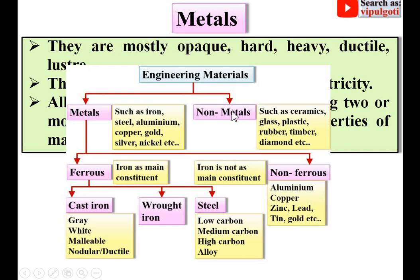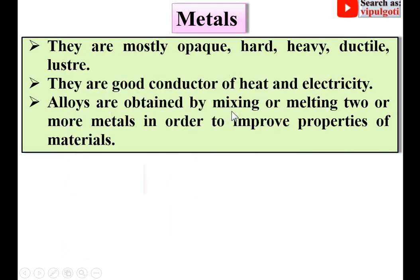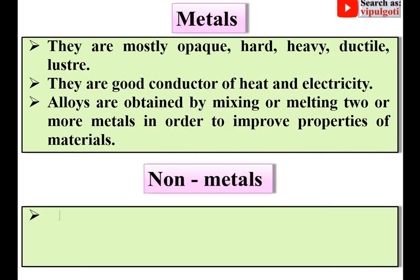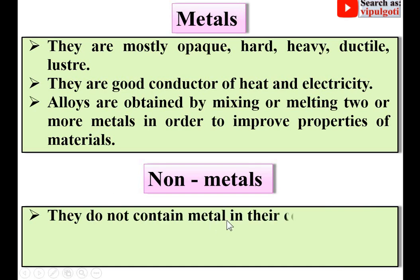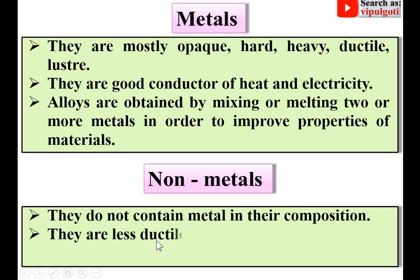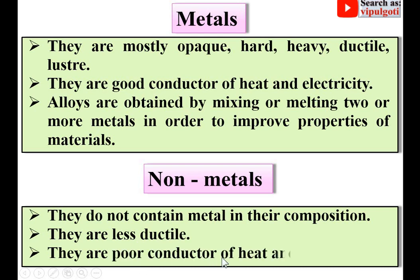Non-metals do not contain metal in their composition. They are less ductile and are poor conductors of heat and electricity. In comparison, metals are good conductors of heat and electricity, whereas non-metals are poor conductors of heat and electricity.